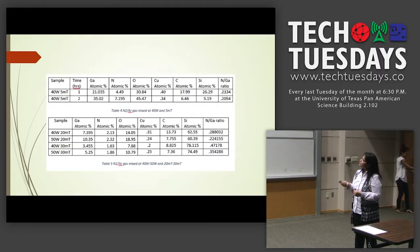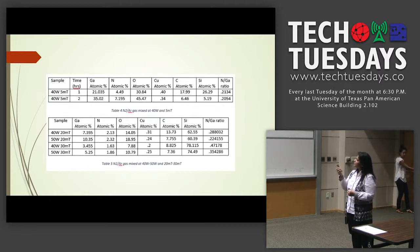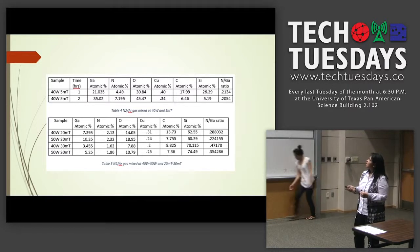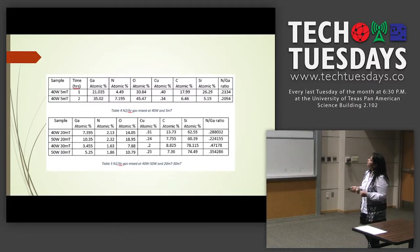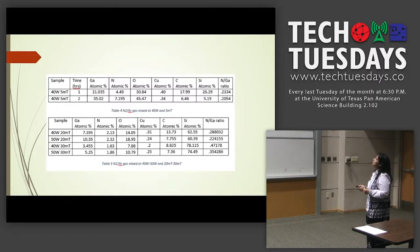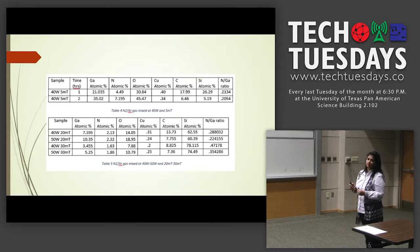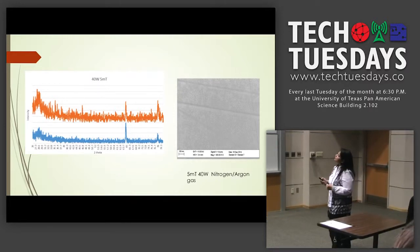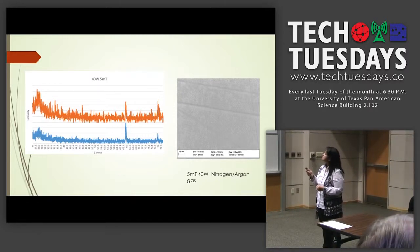These are some of the samples we deposited. We analyzed the deposition and compiled a table. The last two rows show the best deposition rate, where the nitrous and gallium ratio is the highest. This is also another analytical technique.